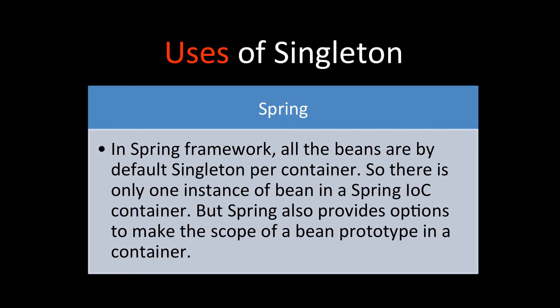Then comes Spring. In the Spring framework, all the beans that Spring provides are by default singleton-scoped in the container — there is only one instance of a bean in the Spring IOC container. Spring also provides the option to make the scope of a bean prototype, which means non-singleton. So you can see that Spring widely uses the singleton design pattern.